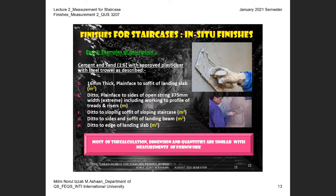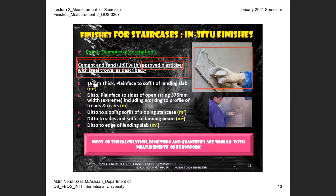The measurement for the landing slab is the length on plan times the width on plan. When measuring the length on plan, consider the deduction of the brick wall. The description is: cement and sand 1:6, approved plasticizer, using steel trowel for a flat surface. State the thickness — 16 mm, 19 mm, 20 mm, or 25 mm. Then write the location: soffit of landing slab in m², side of open string in metres, as per S.5.5.